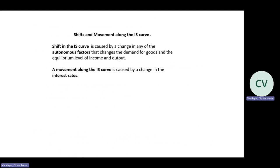Let's look at shifts and movements along the IS curve. A shift in the IS curve is caused by a change in any of the autonomous factors that changes the demand for goods and services and the equilibrium level of income and output. It could be as a result of an increase in government spending, investments, consumption spending, or exports. If there's an increase in any of the autonomous factors, there will be a rightward shift in the IS curve. If there is a decrease in any of the autonomous components, there will be a leftward shift in the IS curve.